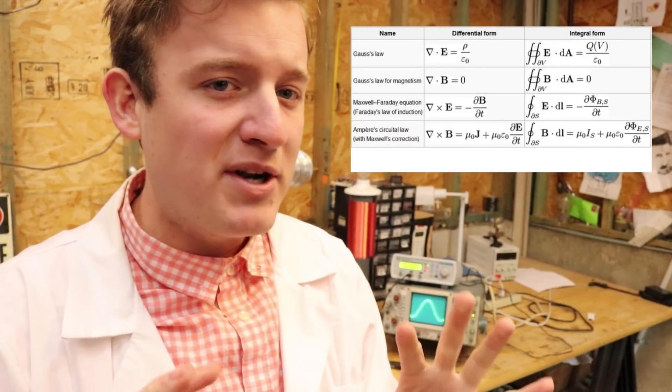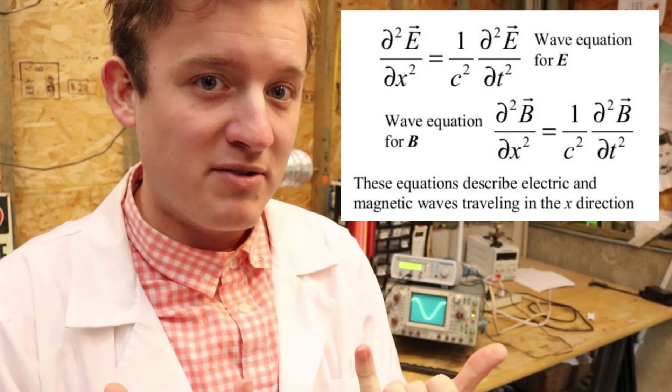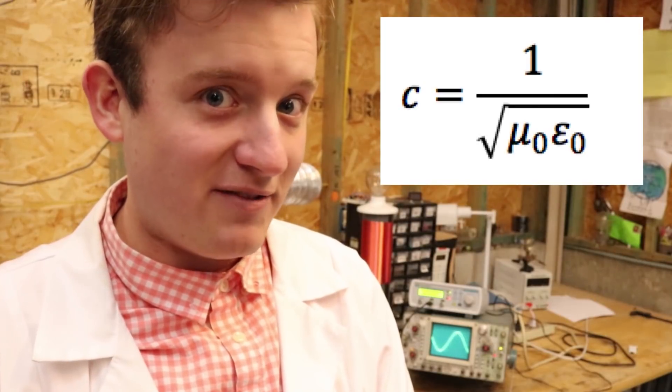The luminiferous ether was the previous physics explanation for how light could exist. After Maxwell unified equations regarding electricity and magnetism, he found that the differential equation they produced had wave patterns, and moreover, these waves traveled at the speed of light. So he assumed that was light, and turns out he was right.